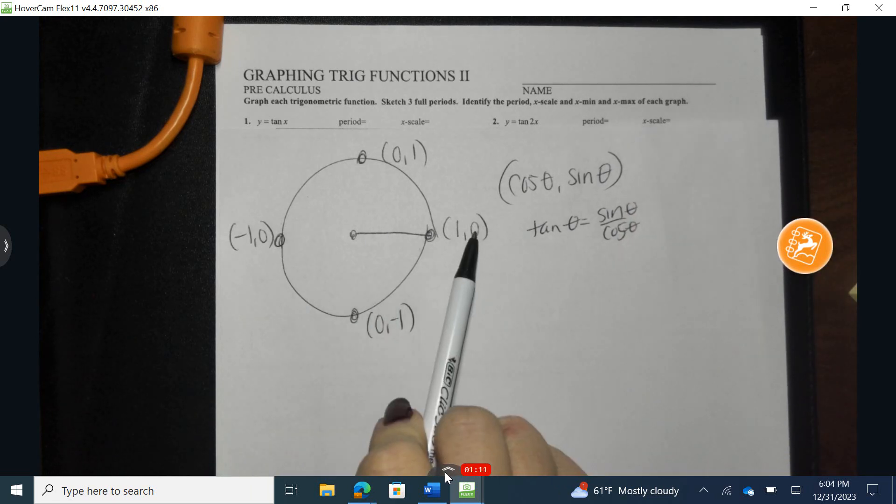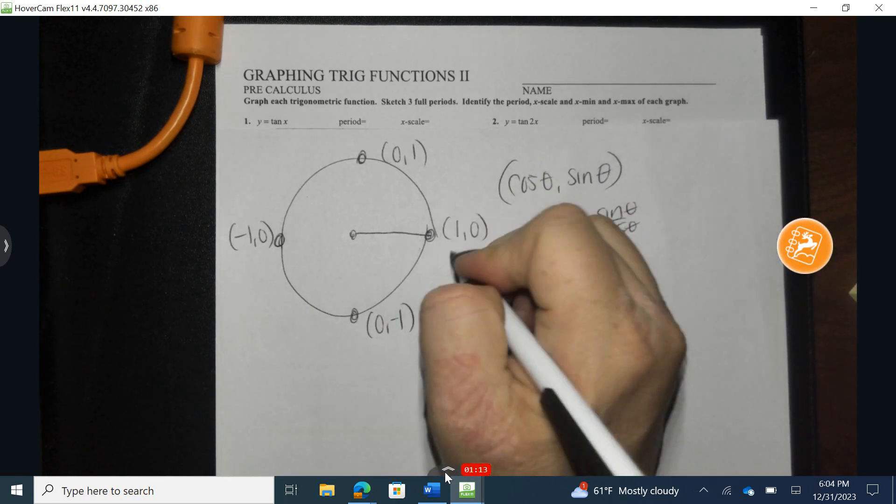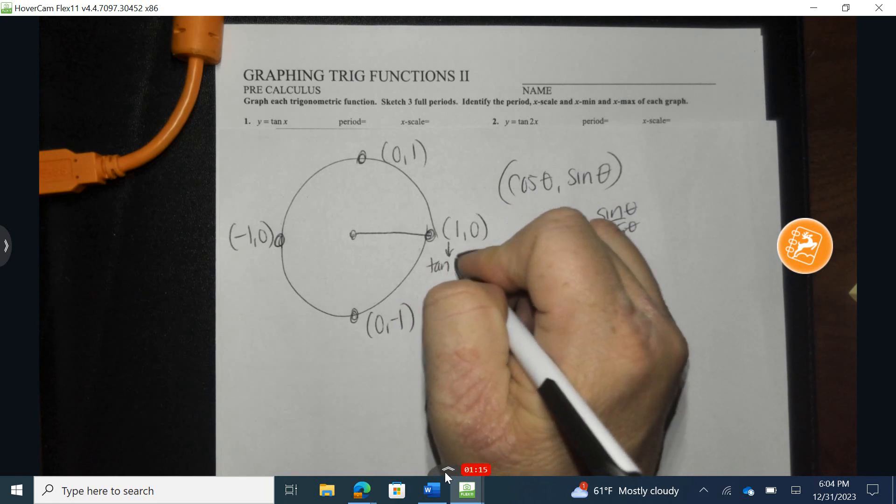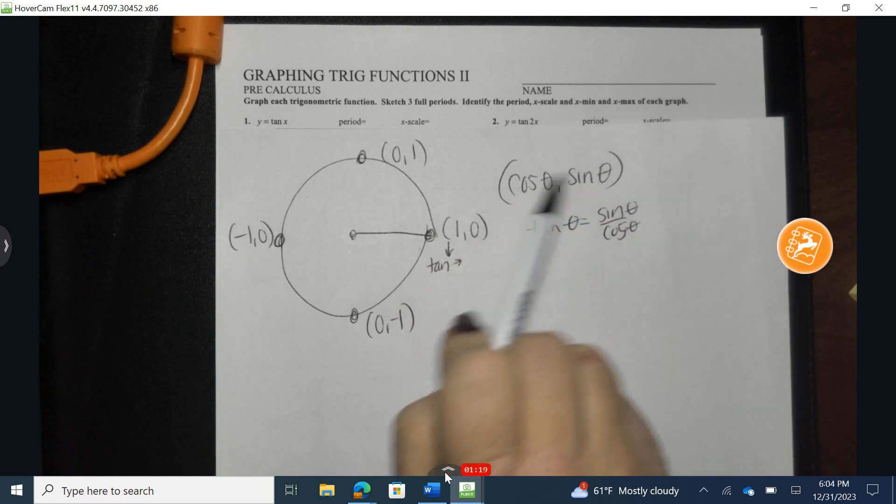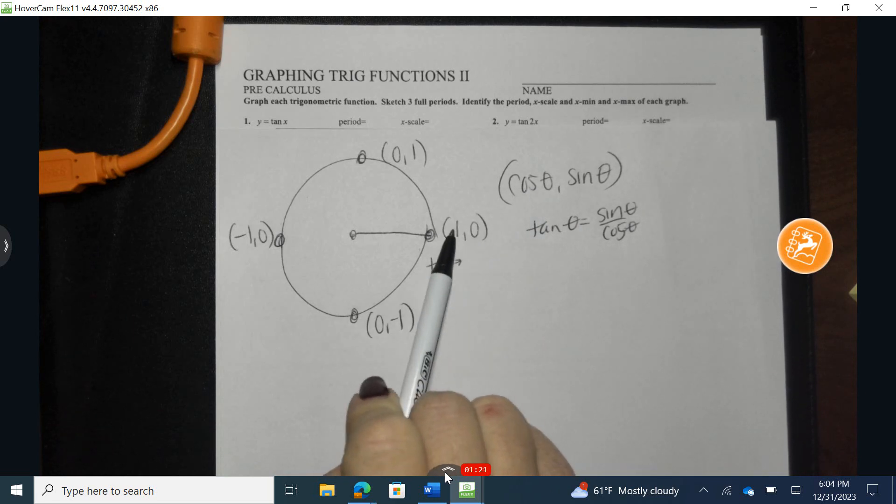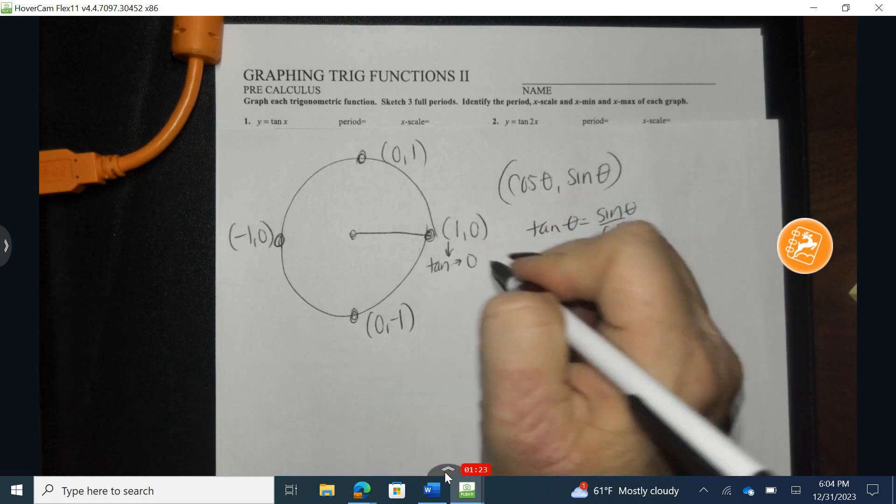So if I take and do cosine divided by sine, the tangent of this angle would be equal to sine over cosine, 0 divided by 1. Well, 0 divided by any number is 0.